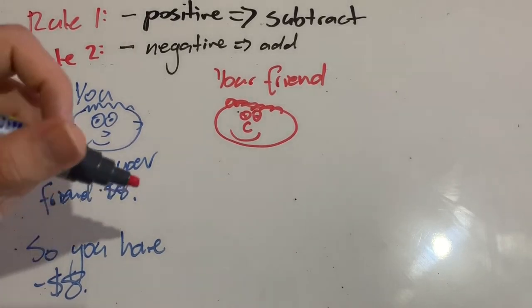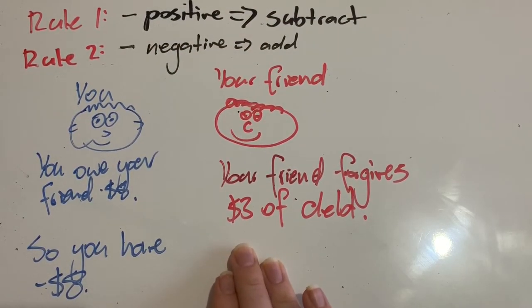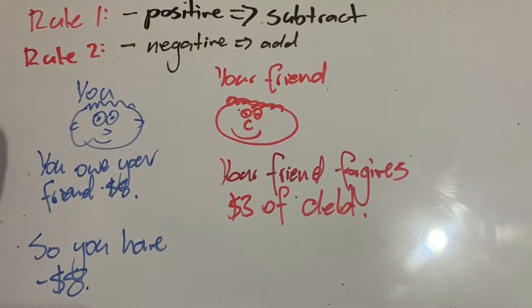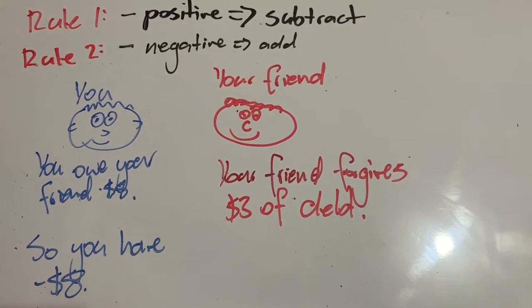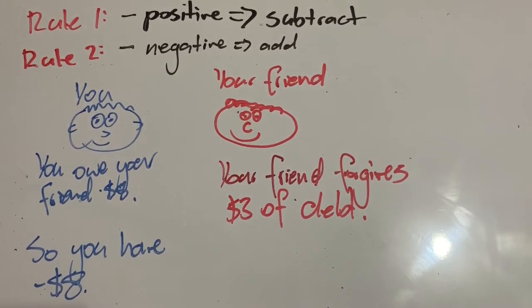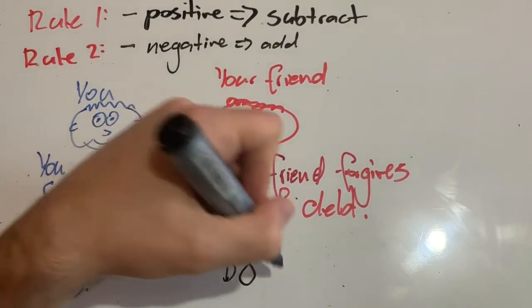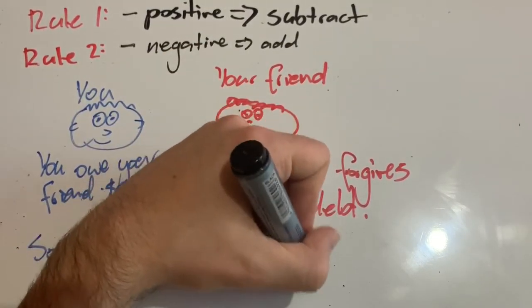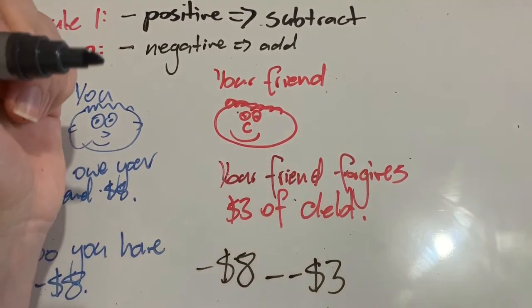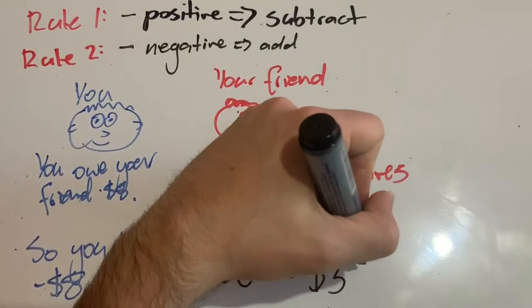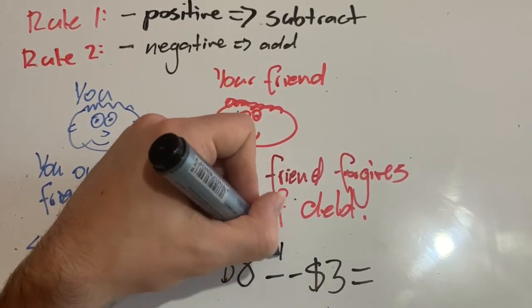So they forgive $3 of your debt. So he's actually taken away some of your debt. That's what he's done. So he's actually subtracted some of your debt and your debt is a negative number. So what this looks like as a math problem is negative $8 minus negative $3. He has taken away some of your debt. He's forgiven it. He says, don't worry, just pay me back for some of it now. And so we can work this out. So this turns into a plus.